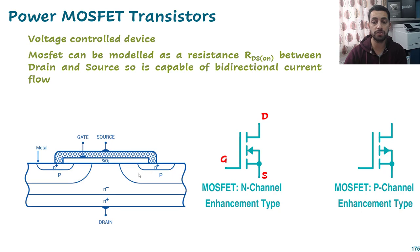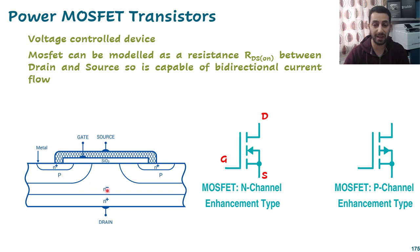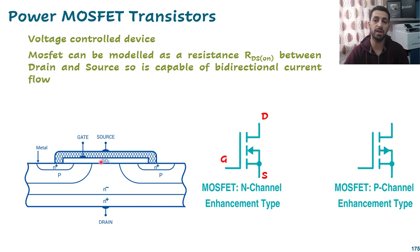Looking at the MOSFET structure, it has different regions with different doping percentages — N+, P, N-, and N+ regions — with source, gate, and drain terminals. There is a SiO2 region which acts as an insulator, so there is no direct electrical contact between the gate and the PN junction inside the MOSFET.